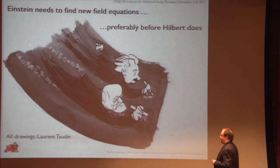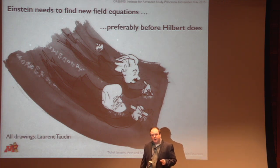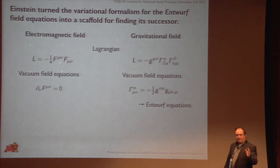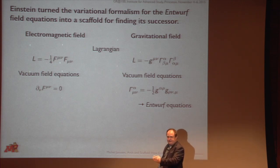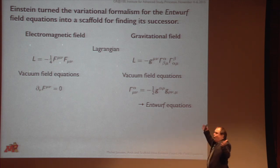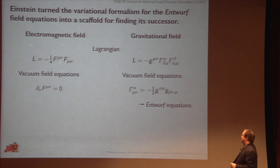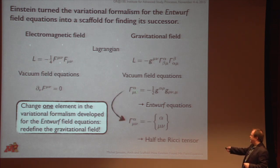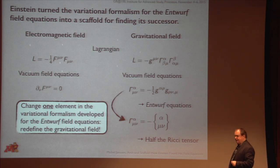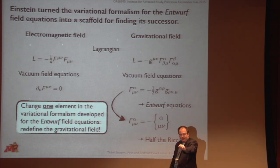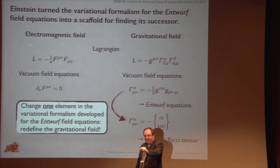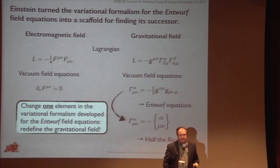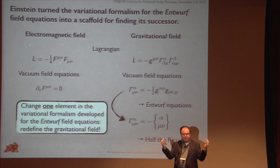He starts looking some more, and finds that the uniqueness argument he was so proud of in November of 1914 is just baloney — it doesn't restrict the choice of Lagrangians at all. So he needs to find new field equations, preferably before Hilbert beats him to the punch. The standard story is that he scraps all of this and goes back to the mathematics — but that's not what's happening. He has this whole system, and he's going to tweak just one component: he's going to change one element in the variational formalism, namely redefine the gravitational field as the Christoffel symbols. When he plugs that into this formalism — which comes out of his physical line of reasoning — he sees that it leads right back to the stuff suggested by the Riemann tensor: namely half the Ricci tensor. Now he's really happy: these two lines of reasoning are finally converging.